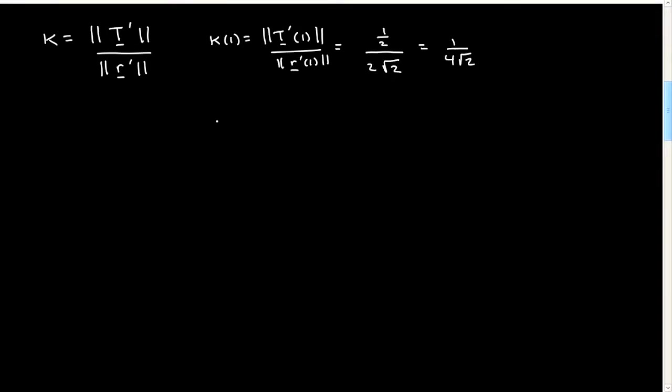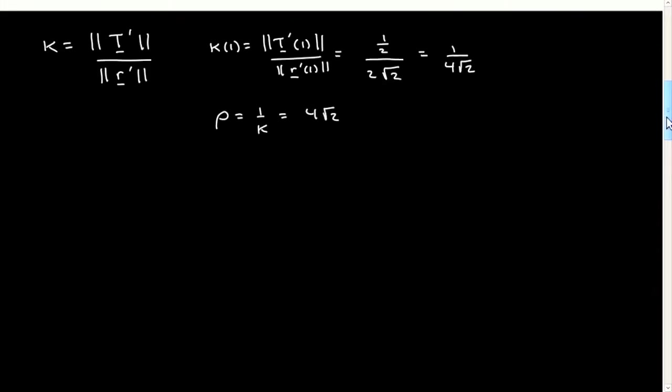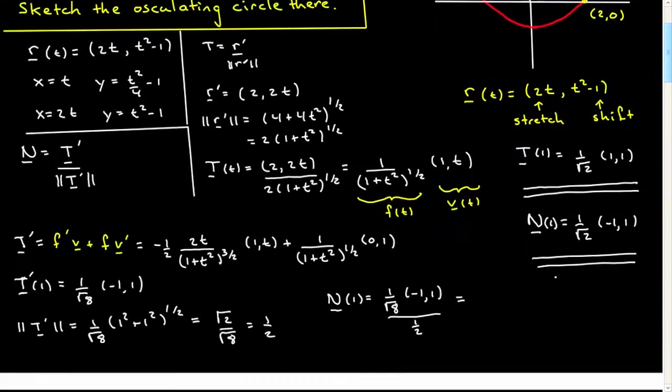What we're particularly concerned with is the radius of curvature, which is 1 over the curvature. That's 4 square root of 2. I will just write them in here. We can remember them. The curvature at 1 is equal to, if I can remember,